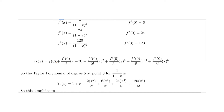So T5(x) equals 1 plus x plus 2x² over 2 factorial, and so on. The value at 0 is 1. The first derivative 1 over 1 factorial times x is just x. The second derivative 2 divided by 2 factorial cancels to give x squared. The third derivative 6 divided by 3 factorial — since 3! is 6 — cancels. The fourth: 24 over 4! is also 24, cancels. The fifth: 120 over 5! is 120, cancels.